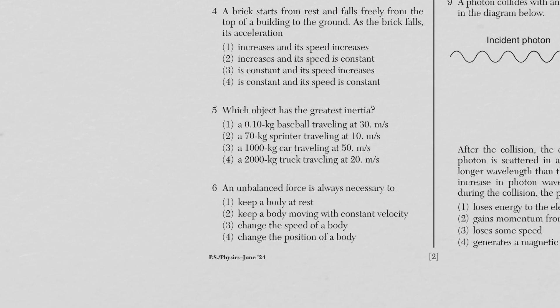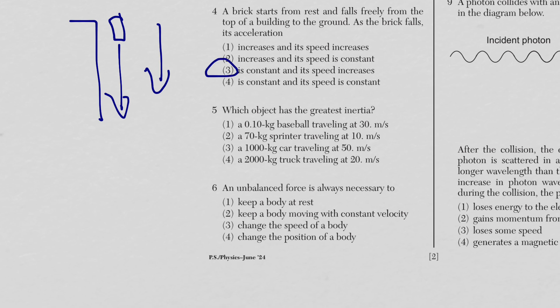The next few questions are more conceptual. Question four: a brick falls freely from a building. Anytime an object is in free fall, it's under the influence of gravity, which is a constant acceleration. As the brick falls, the acceleration stays constant but the speed increases — that's choice three.